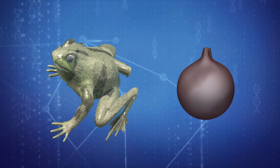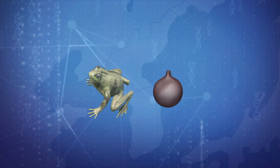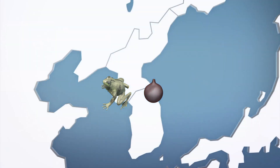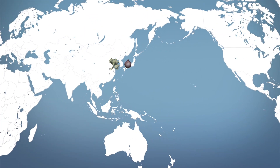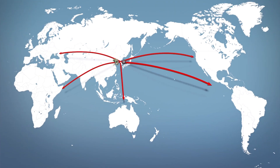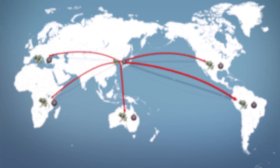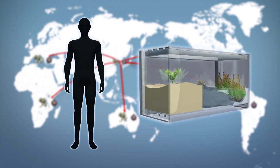Chytridiomycosis, or chytrid, is caused by two strains of the Batrachochytrium fungus and originally found in the Korean Peninsula. The BBC reports that the disease has spread to over 60 countries, likely facilitated by humans through the legal and illegal pet trade.